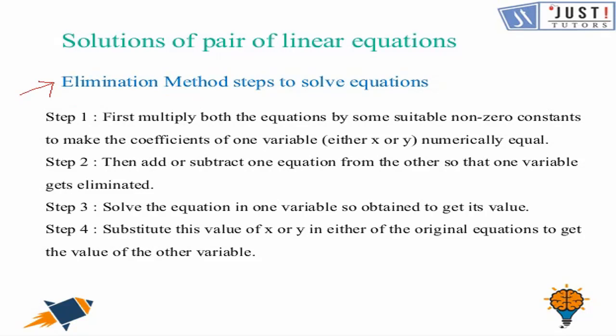There are steps to follow when using the elimination method. Step one: multiply both equations by a suitable non-zero constant to make the coefficient of one variable numerically equal. For equations ax plus by equals c and a1x plus b1y equals d, we make the coefficients of x or y equal. Step two: add or subtract one equation from the other to eliminate one variable.